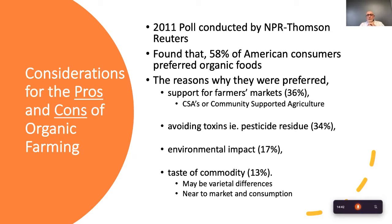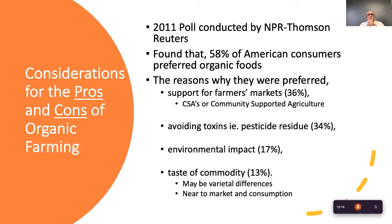Other reasons consumers prefer organic include reducing environmental impacts, cited by 17%, and the taste of the food. Varieties used in organic production are not the same as those used in commercial agriculture. Commercial agriculture selects for uniformity, bruise resistance, transportability, and uniform size, whereas organic varieties are selected more for taste. Nearness to market and nearness to the consumption site is a big part of organic agriculture.